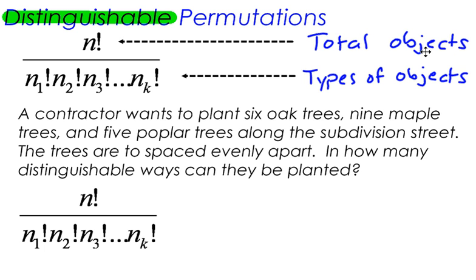The best way to understand this is to just look at an example. A contractor wants to plant 6 oak trees, 9 maple trees, and 5 poplar trees along a subdivision street. The trees are to be spaced evenly apart. How many distinguishable ways can they be planted? So there's that key word.